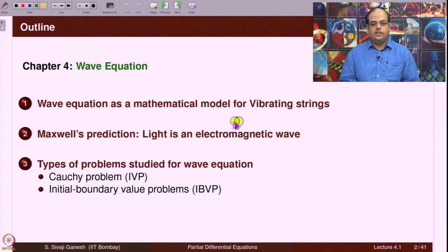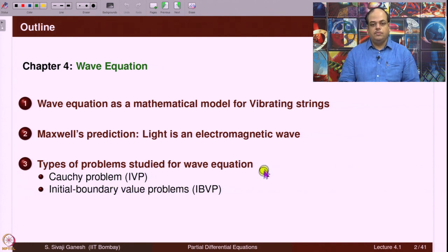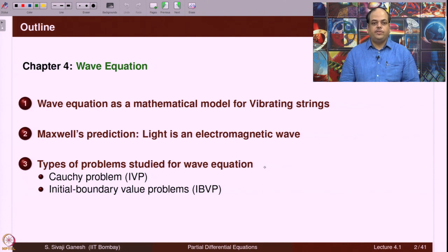Then we present Maxwell's prediction that light is an electromagnetic wave, which is based on the wave equation. And we introduce the two problems that we are going to study for the wave equation: one is called the Cauchy problem or initial value problem, and the second is initial boundary value problems. These are the two kinds of problems we are going to study for the wave equation, mostly for the one dimensional wave equation.